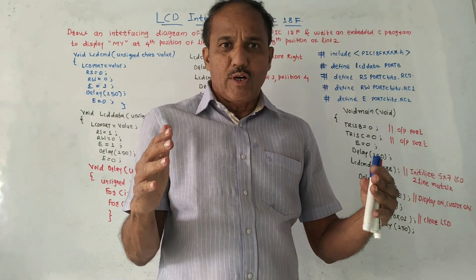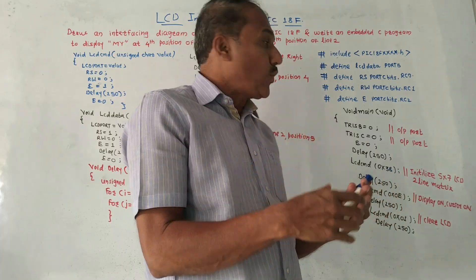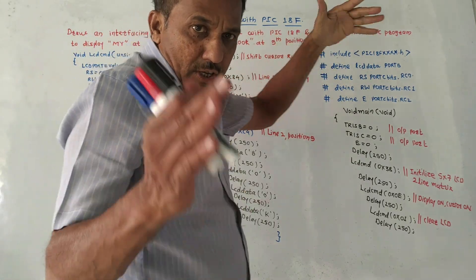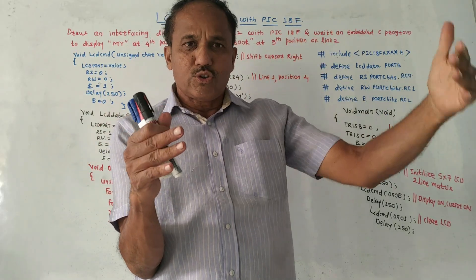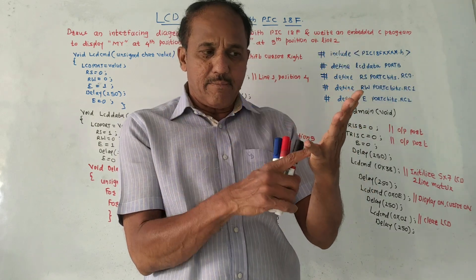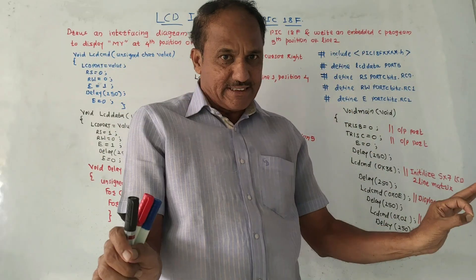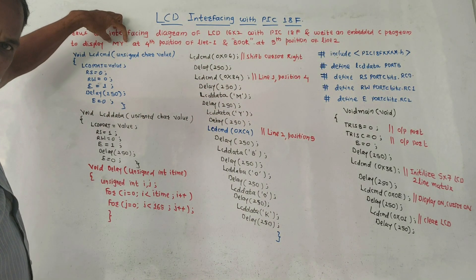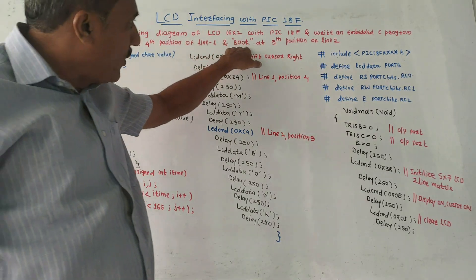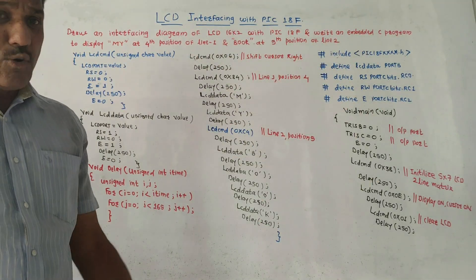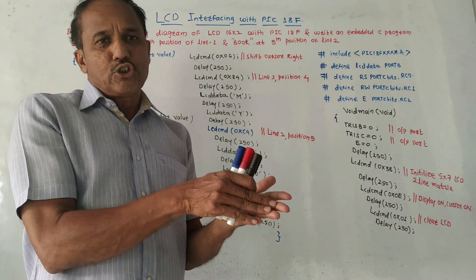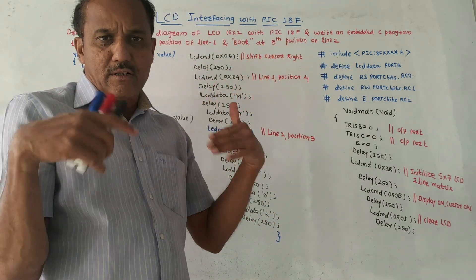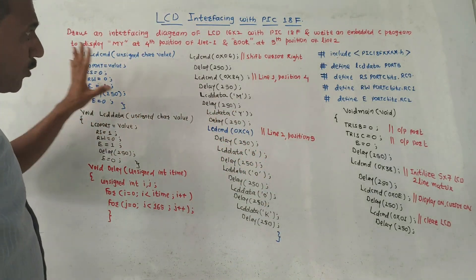Now let us learn one program. After this you will be in a position to write any program related to LCD interfacing on your own. The given question is: draw an interfacing diagram of LCD 16x2 with PIC 18F — as explained before, Port B data pins connected to Port B and RS, enable pin, and read-write pin connected to Port C. Write an embedded C program to display 'MY NAME' at the fourth position of line one and 'BOOK' at the fifth position of line two.